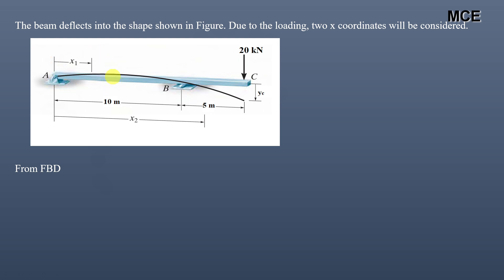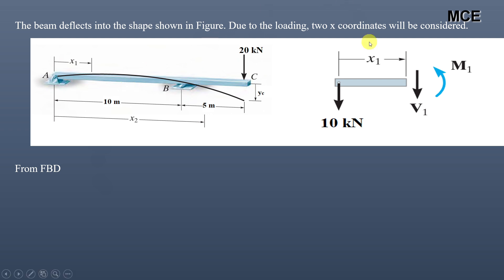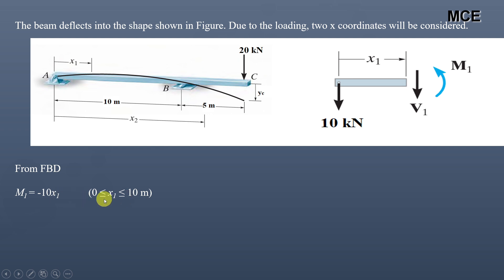Taking a section in portion AB to find the moment equation, and using the free body diagram with clockwise moments positive and anti-clockwise negative, we get M1 + 10 × x1 = 0, so M1 = −10x1. This equation is valid for x1 in the range 0 to 10 meters.